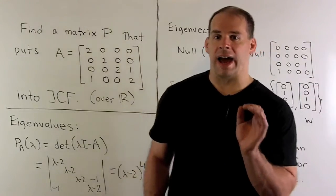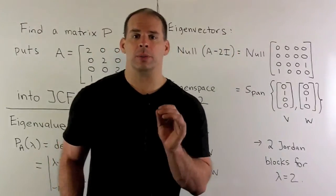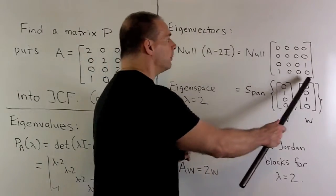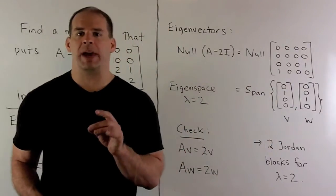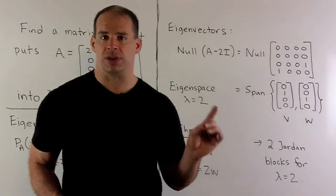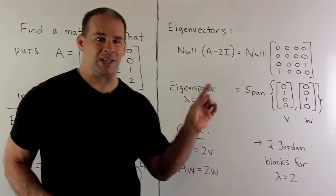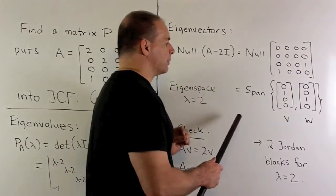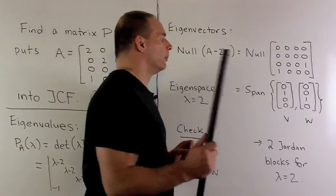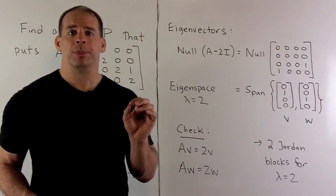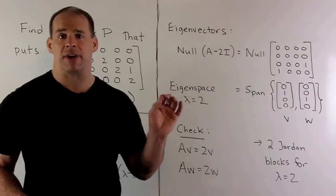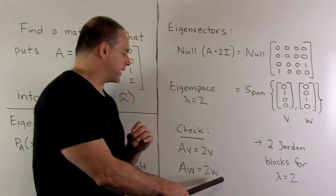To get the eigenvectors, we're going to compute the null space of A minus 2I. We'll get this matrix here. Recall the null space is the set of all vectors V such that our matrix times V equals 0. By inspection, we'll have as a basis [0,1,0,0] and [0,0,1,0]. If I call those vectors V and W, we check our work by applying A and making sure that twice our vector comes out.